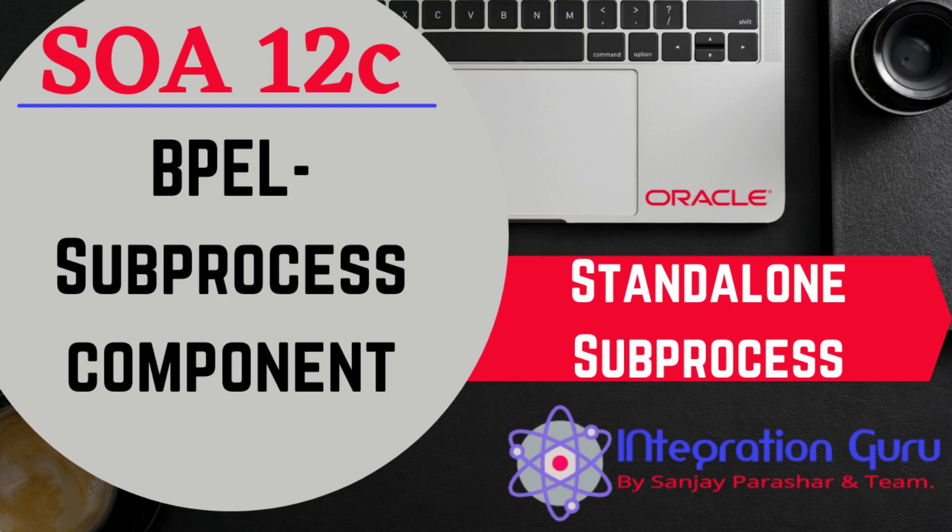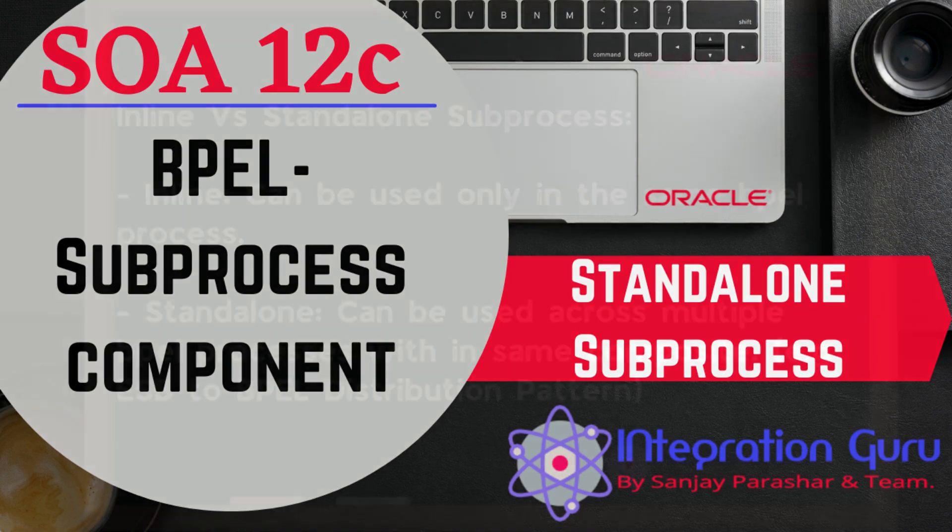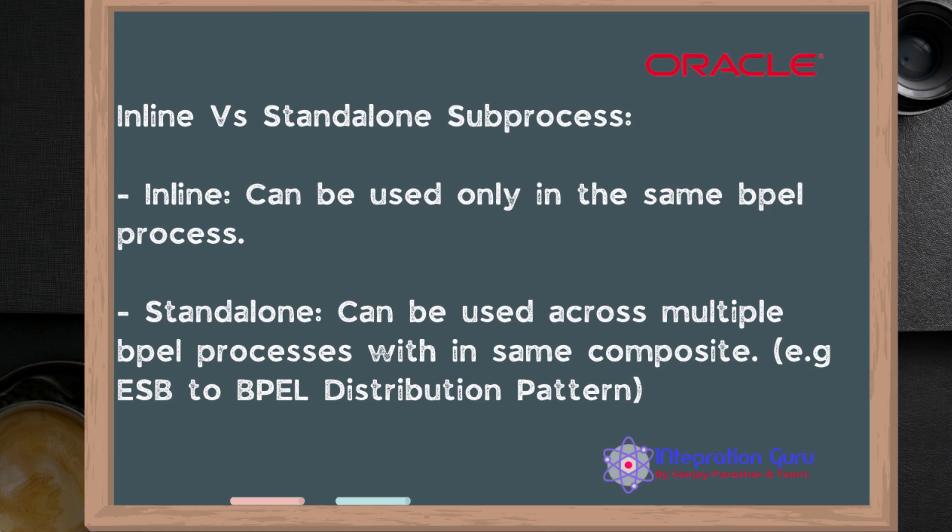Before the demo, let's see the main difference between inline and standalone subprocess, and when to use which. An inline subprocess is used within the same people process, as we saw in the last video. However, a standalone subprocess can be used in multiple people processes within one composite. In our last video, under the limitations of subprocess, we shared that you cannot use a subprocess within multiple composites.